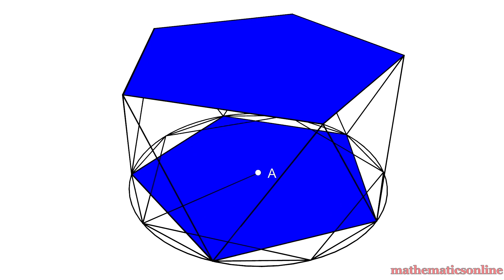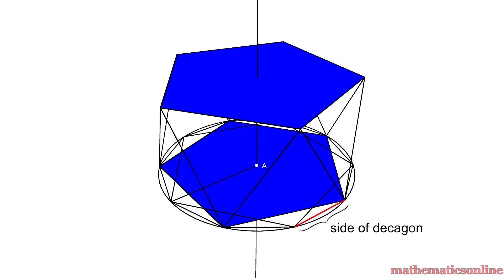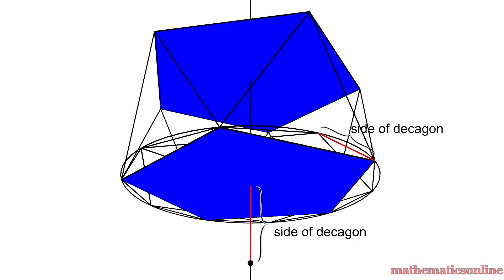Next, let's create a perpendicular line going through the center of the circle. Looking back at the decagon we created, we can use the side of the decagon to cut the vertical line from the top plane. This point will help us construct the top of the icosahedron, and we can repeat the steps to create the bottom.